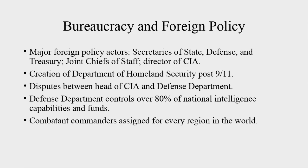It became clear after 9/11 that our intelligence agencies weren't working together the way they should have. The FBI had one piece of the puzzle, the CIA had the other, but because they couldn't talk to each other, they weren't able to figure it out in time. So the government created the Department of Homeland Security. Now the national intelligence agencies have to work together, with a Director of National Intelligence to coordinate information and report it to the President daily. They also streamlined the process by moving 22 agencies into the Department of Homeland Security — agencies like ICE, FEMA, TSA, and Border Patrol all now fall under it.